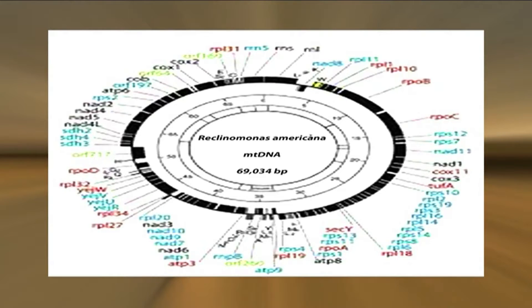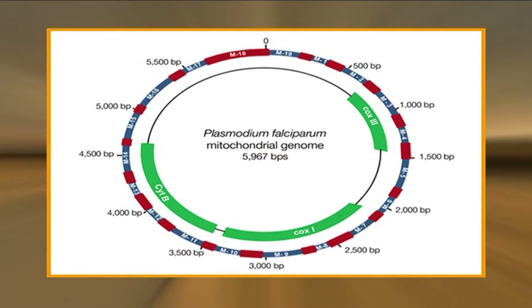The largest number of mitochondrial genes have been found in the mitochondrial DNA of the protozoan Reclinomonas americana, which is 69 kilobases and contains 67 genes. The smallest mitochondrial genome is that of the protist Plasmodium falciparum, which is 6 kilobases and codes for only 3 proteins. In contrast, the genomes of free-living proteobacteria are 7 to 10 megabases.